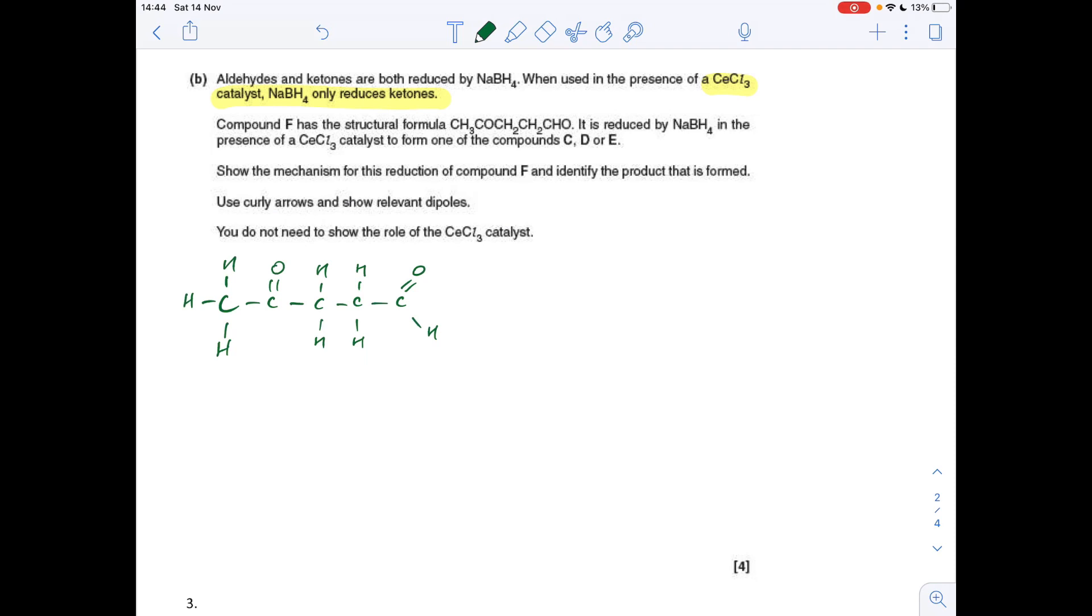Okay, so part B now. We've got the information here that if you use CeCl3 in the presence of NABH4, it's only the ketone group that's going to be reduced. Obviously without the CeCl3, both the carbonyl groups, the ketone and the aldehyde, could be reduced.